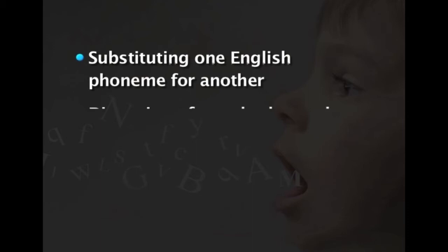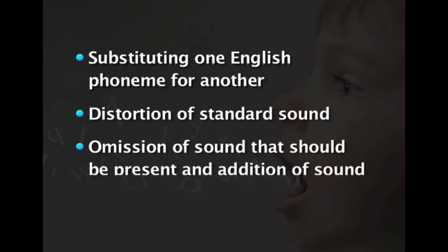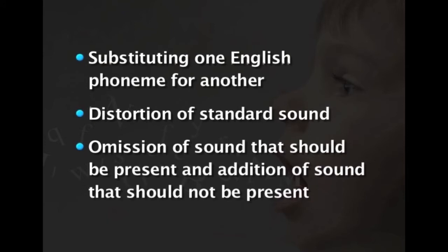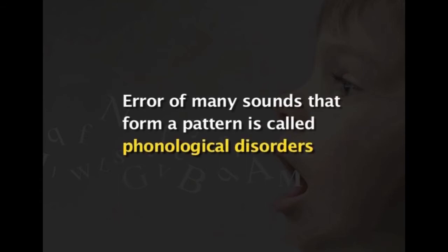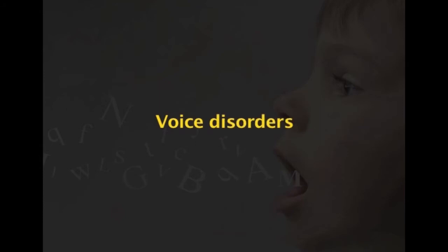Articulation disorders interfere with communication because of abnormal production of speech sounds. The abnormal productions include substituting one English phoneme for another, distortion of a standard sound, omission of a sound that should be present, and addition of a sound that should not be present. Articulation disorder occurs when a person cannot correctly pronounce one or more sounds. This may occur as a result of delayed development, poor muscle control, cleft lip or palate, hearing impairment or learning disabilities. Errors of many sounds that form a pattern are called phonological disorders.